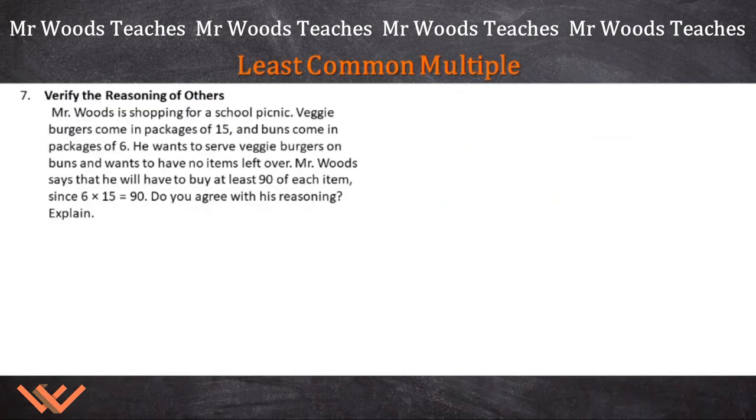Least common multiple. Now let's look at a word problem with this. And it says here, verify the reasoning of others. What does this mean right here? Verify the reasoning of others. I'm going to come back to that. Let's read this. Mr. Woods is shopping for a school picnic. Veggie burgers come in packages of 15 and buns come in packages of 6. He wants to serve veggie burgers on buns and wants to have no items left over. Mr. Woods says that he will have to buy at least 90 of each item since 6 times 15 is equal to 90. Do you agree with this reasoning? Explain.